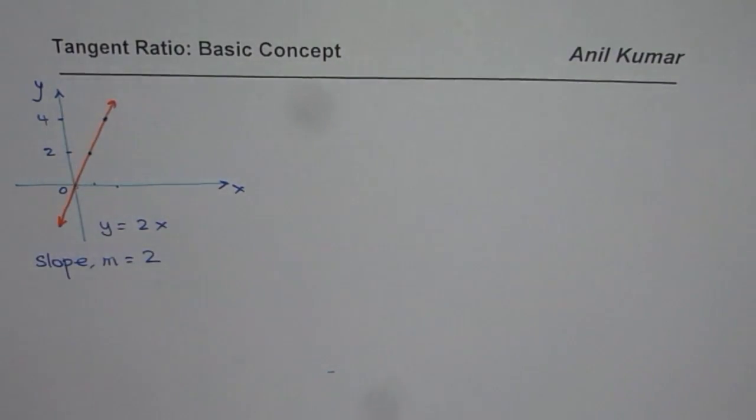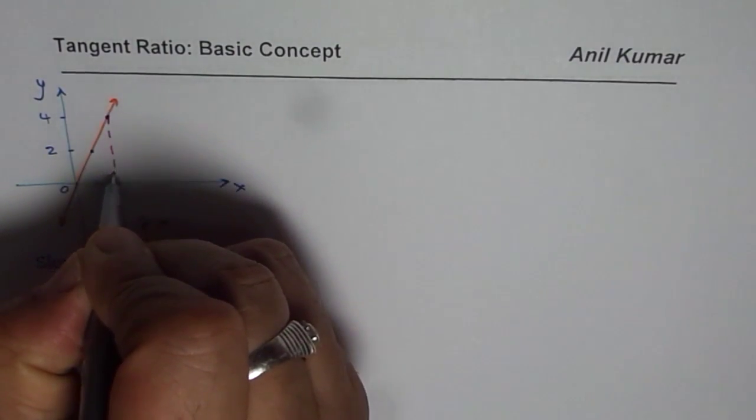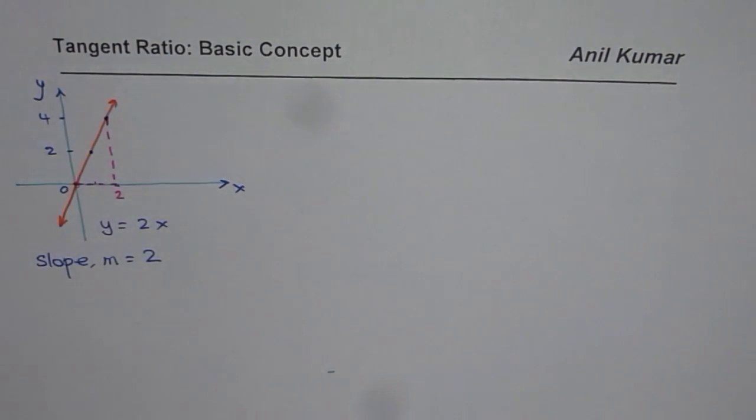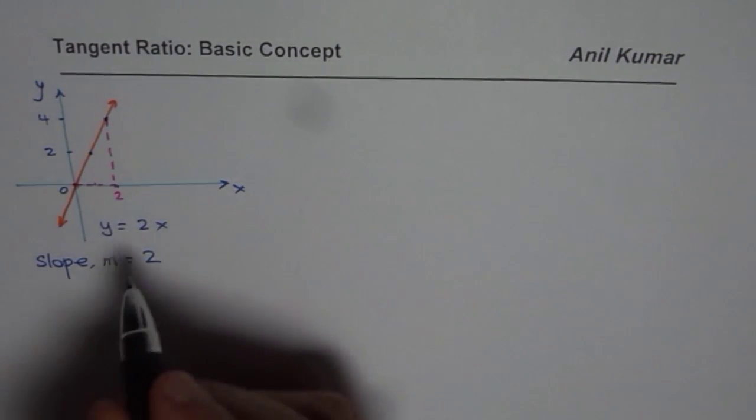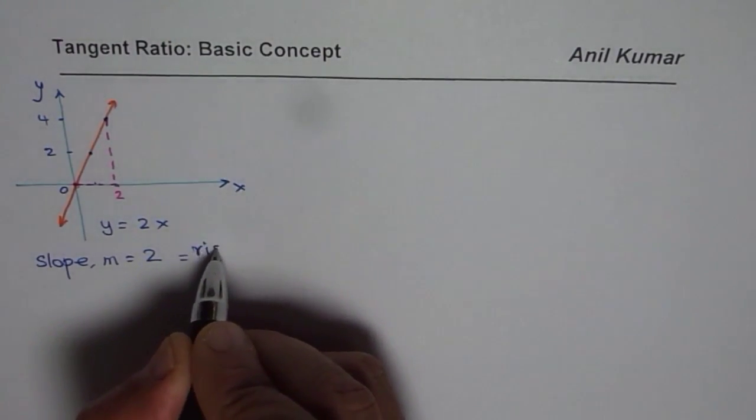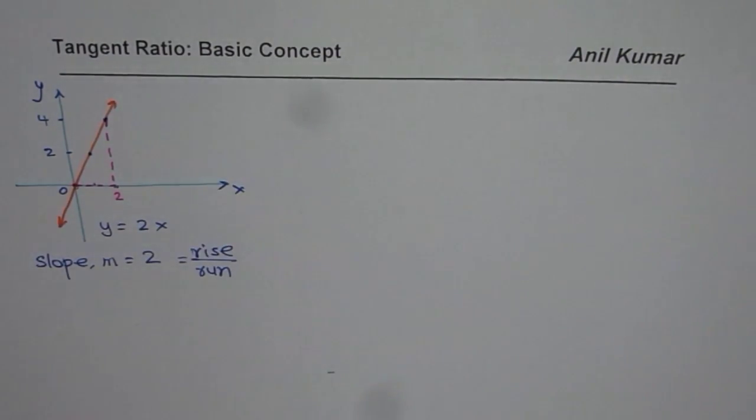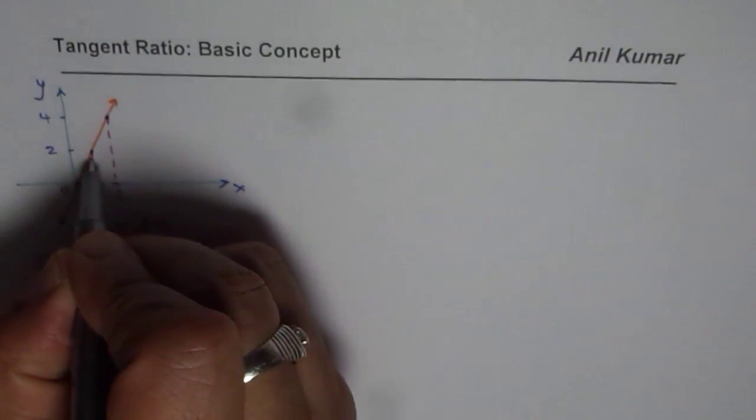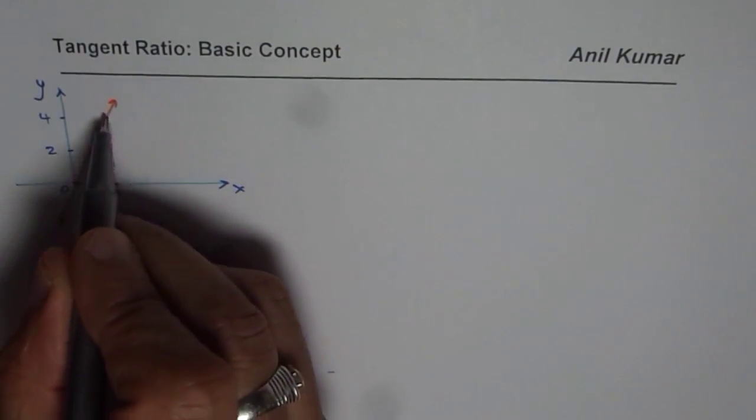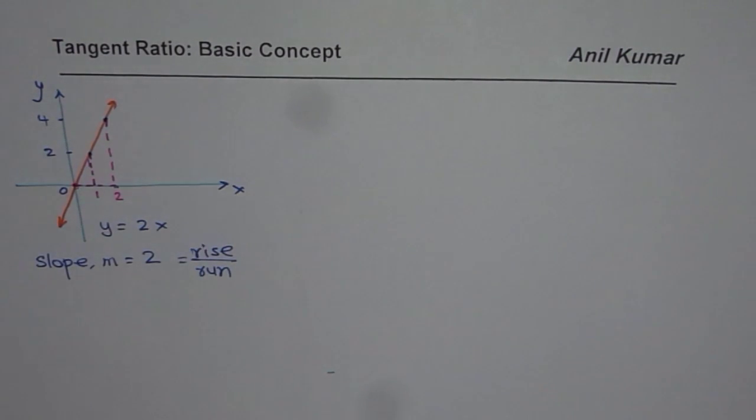And we also understand that we can find slope by rise over run. That is to say that if I consider any 2 points on the line, let me consider these 2 points, origin and the point 2, 4. So in that case, slope is equal to rise over run. And we clearly know that rise over run is the same. You could consider any 2 points. Even if I consider the point which is much before that, even then the rise over run will be same. The ratio is the same.